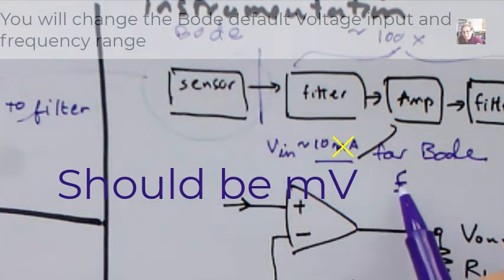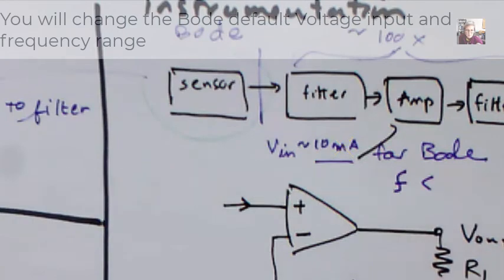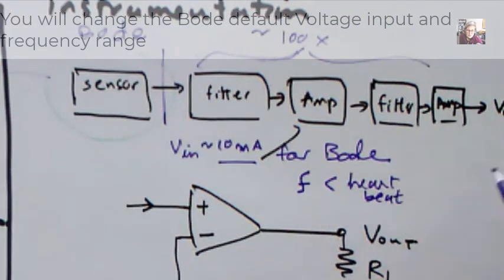And in terms of the frequency, the lowest frequency we choose should be something below the heart rate. So we can see how it treats these low frequencies below the heartbeat rate.